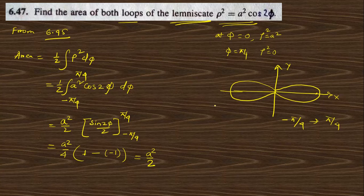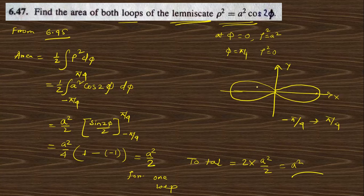This is for one loop. The total area equals 2 × (a²/2) = a². Due to symmetry, each loop has area a²/2, so the total area of both loops is a².